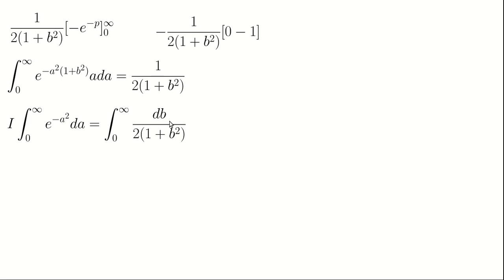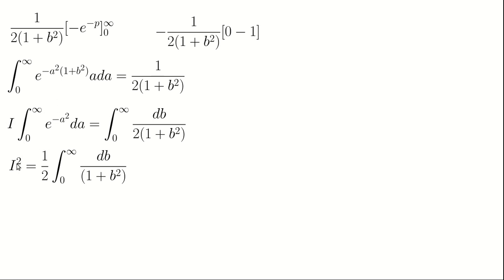Substituting back into the outer integral, I squared equals the integral of 1 over 2(1+b^2) db. We notice this integral has the same form as I squared itself, giving I squared equal to one half times the integral of db over (1+b^2). To solve this, we let b equal to tan(theta), so db equals sec^2(theta) d theta.